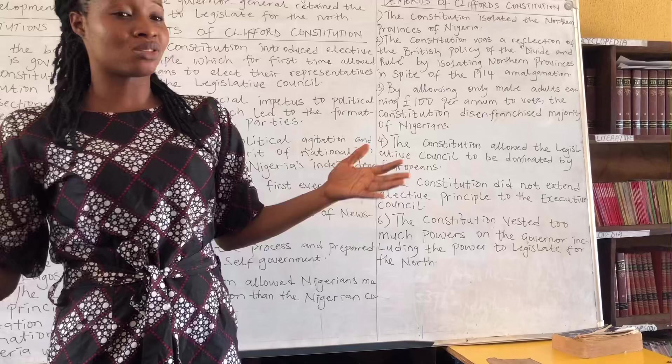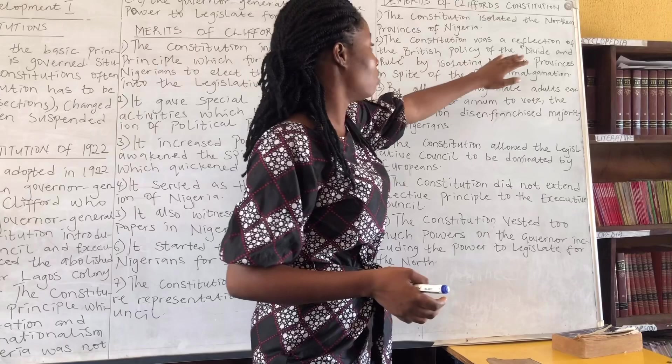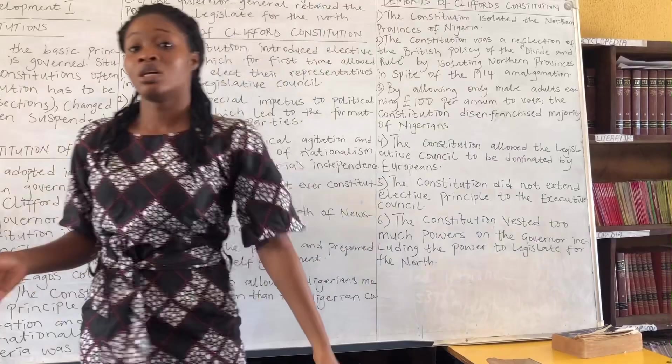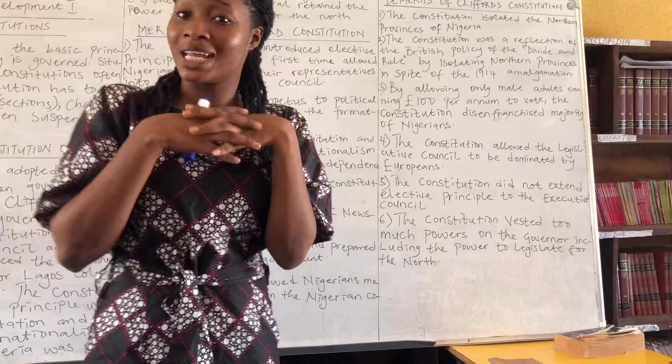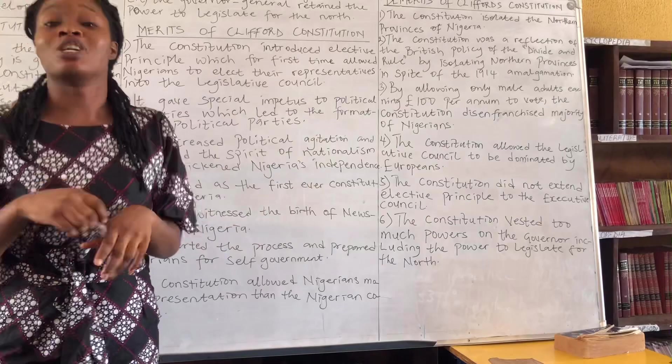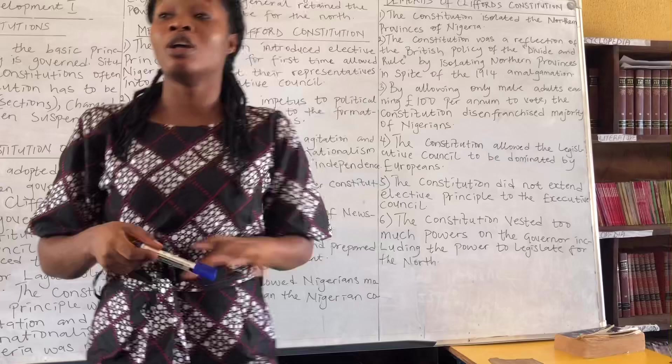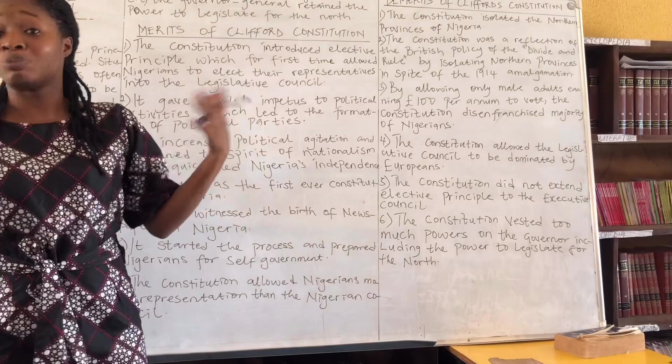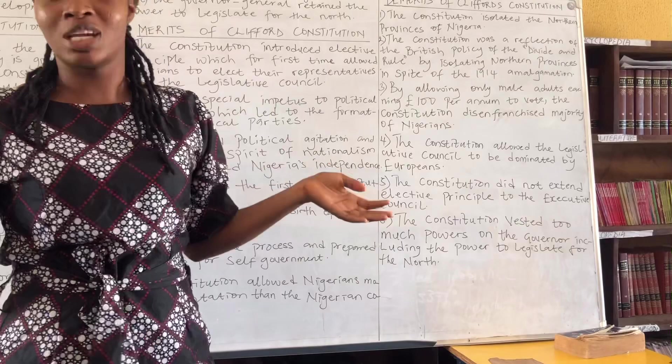Demerit two: the constitution was a reflection of the British policy of divide and rule, by isolating the Northern provinces despite the 1914 amalgamation. After bringing Nigeria together as one, they still decided to keep the North under their direct control — probably because of the agricultural produce being exported from there. They knew that if northerners had representatives who could speak for them, they would legislate against the exportation of their cash crops and retain the revenue for their region.